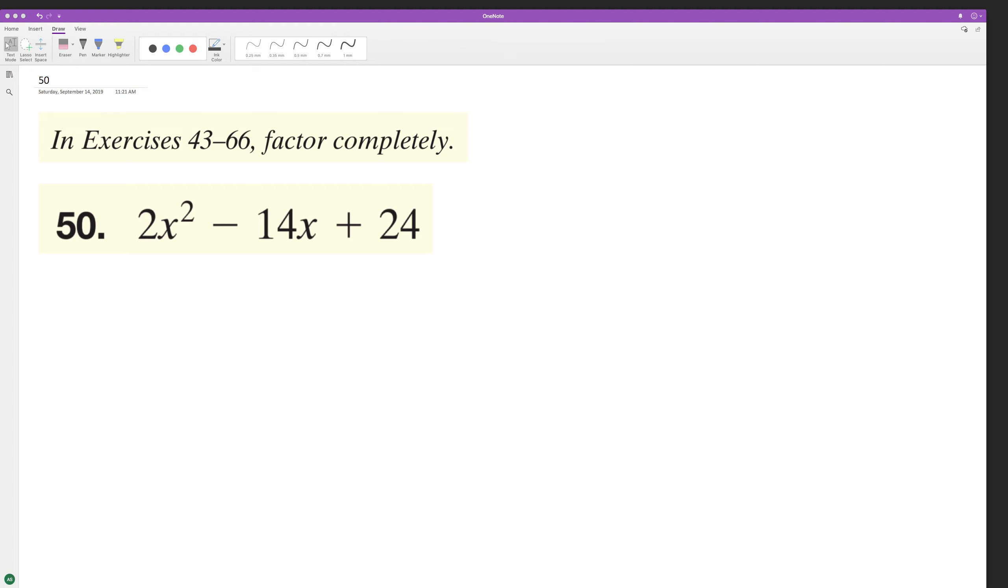Let's factor the following problem completely. Factoring this out, 2 quantity, we'll get x squared minus 7x plus 12.